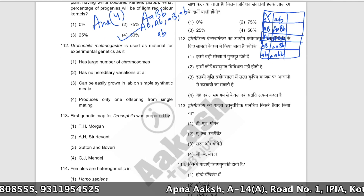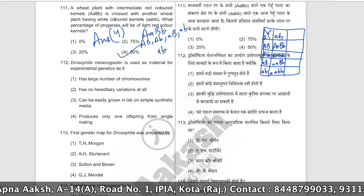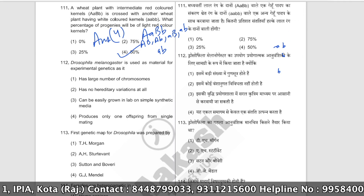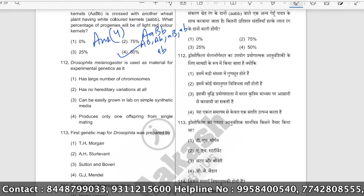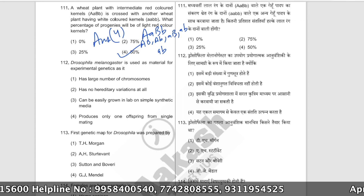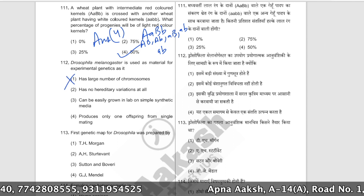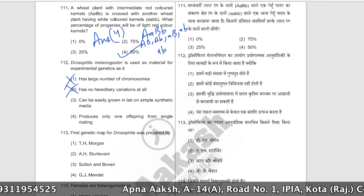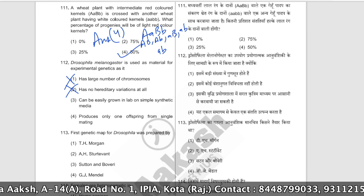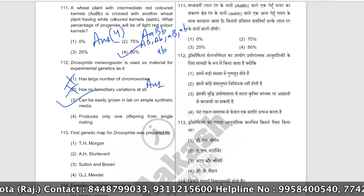Drosophila melanogaster is used as material for experimental genetics because it has a large number of chromosomes — no, that is not the reason. 'Has no hereditary variation' — that's not a valid reason either. The correct reason is: it can be easily grown in the lab on simple synthetic media. The correct answer is option number three.